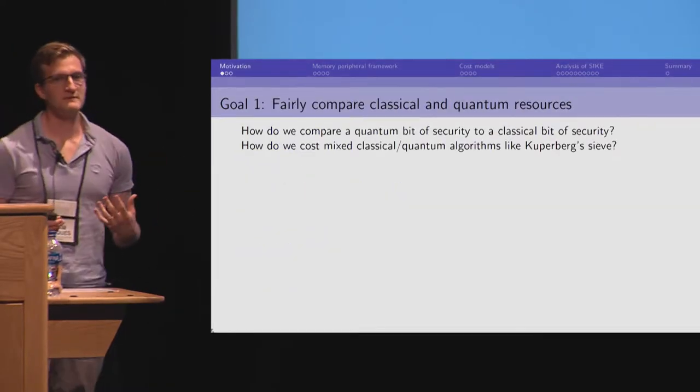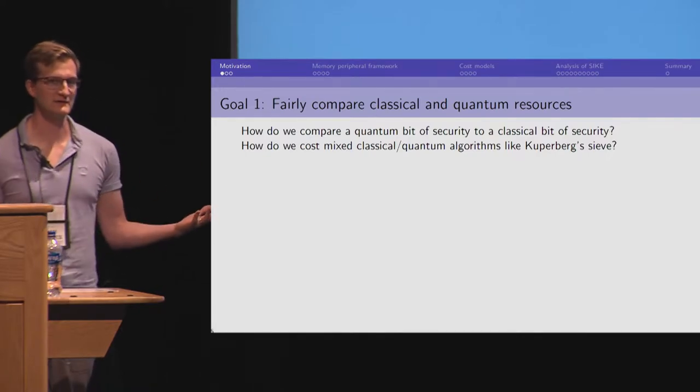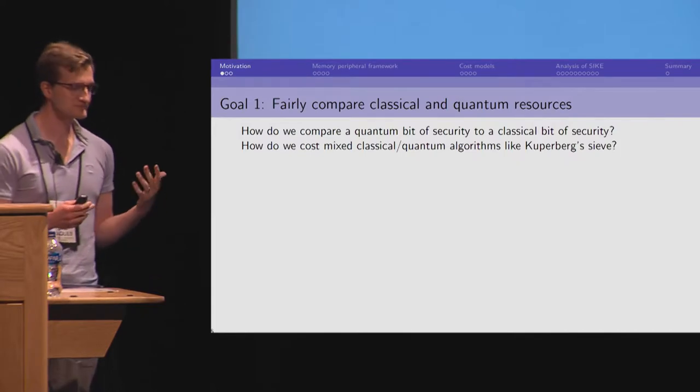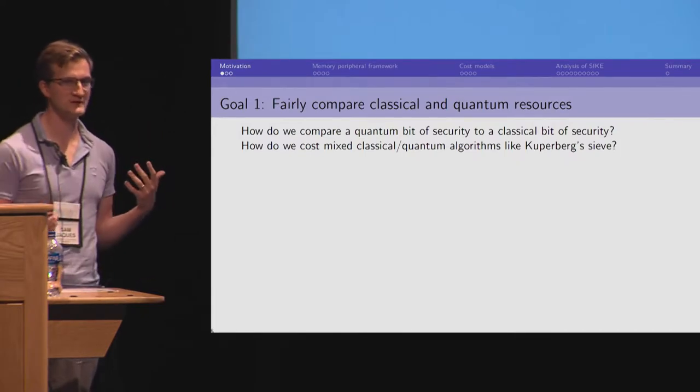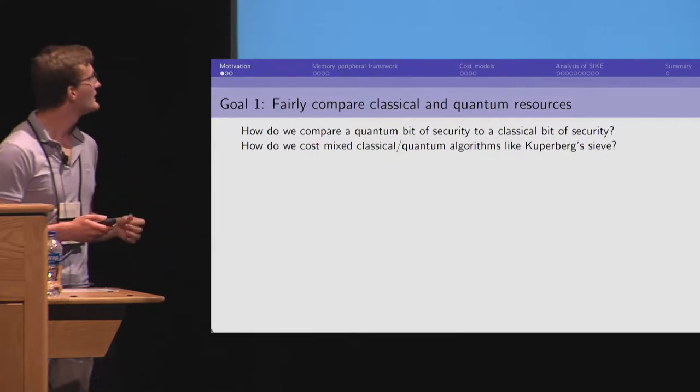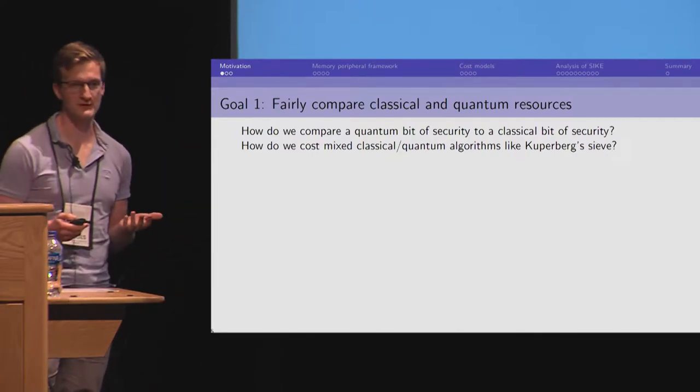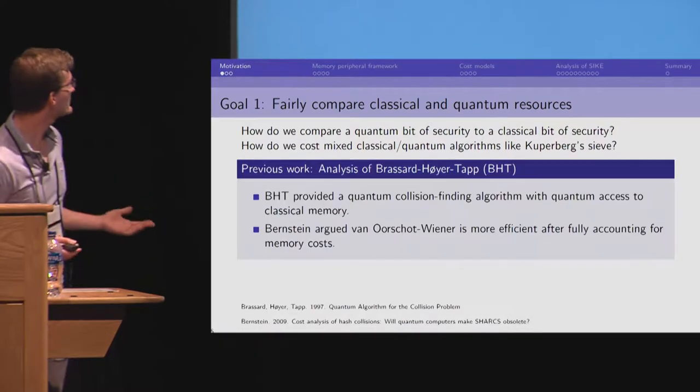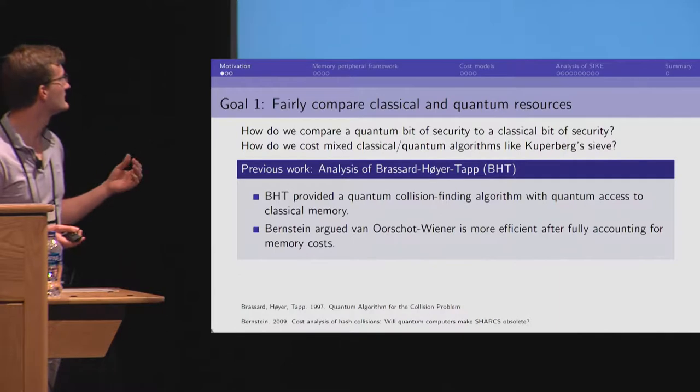So, the first thing we want to be able to do is to fairly compare a classical and a quantum algorithm. We want to be able to say if something is easier to attack with the classical algorithm or easier to attack with the quantum algorithm. And sometimes there's algorithms that have both classical and quantum components. And this is a problem that has come up before and is well known.